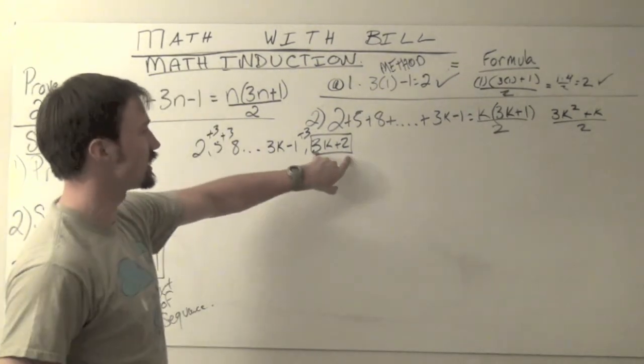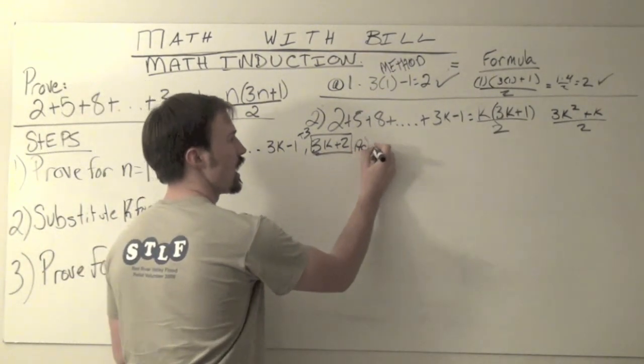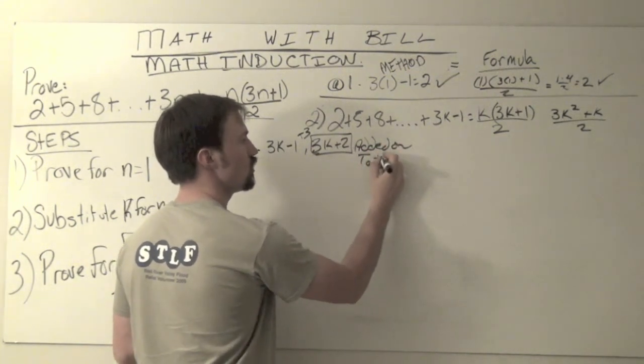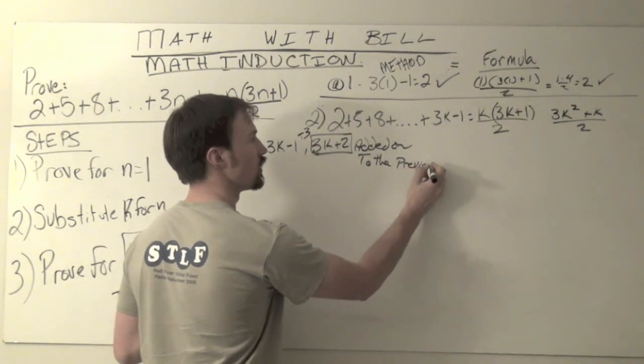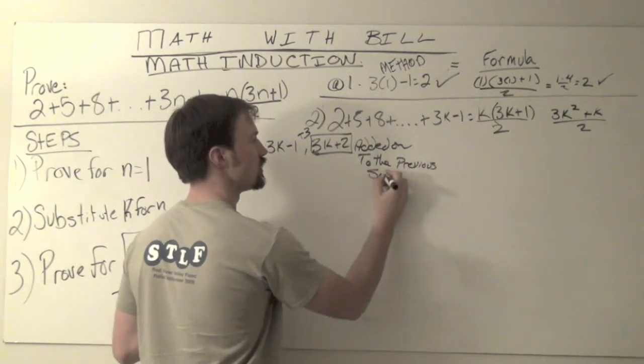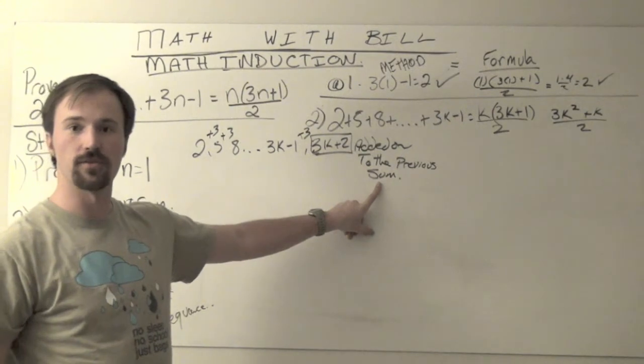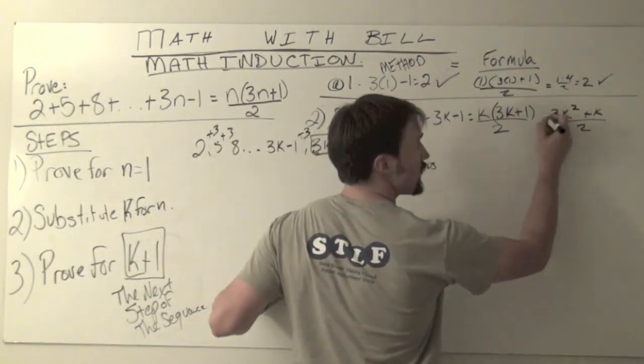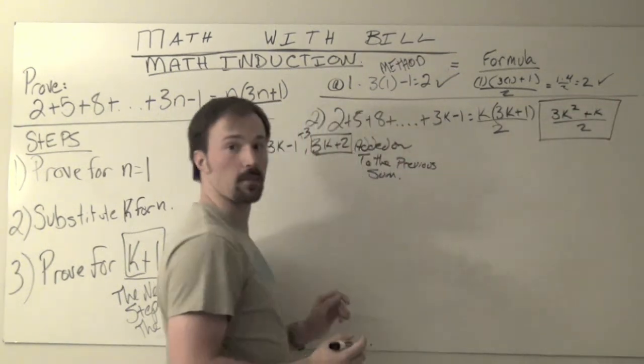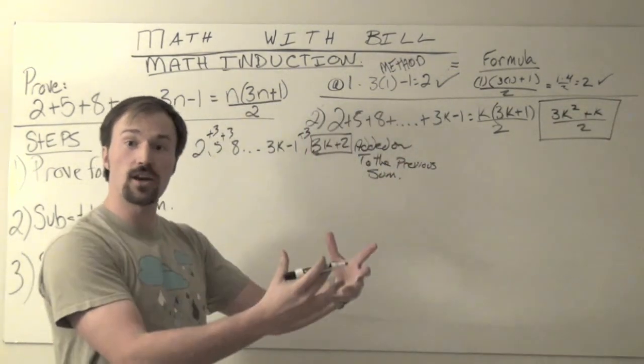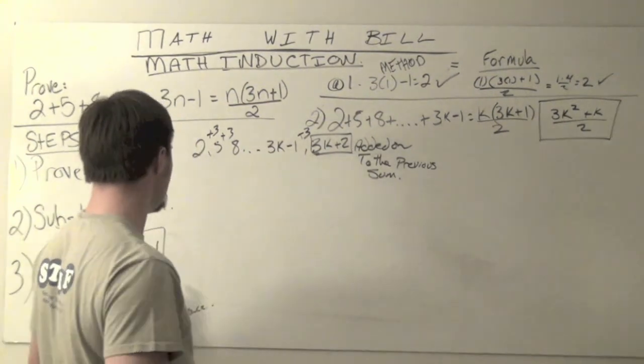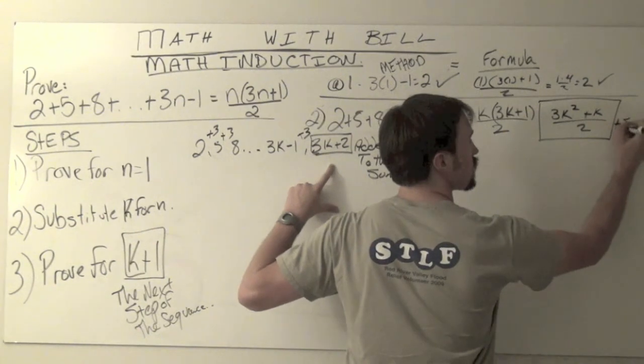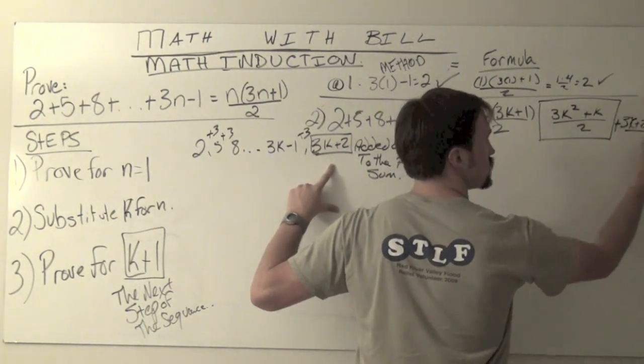That means that this is going to be added on to the previous sum. So that means our former sum, this 3k squared plus k all divided by 2, to bring in our next term, all we need to do is add on this next term which is 3k plus 2. So plus 3 times the k value plus 2.